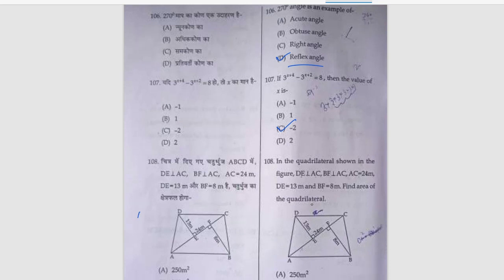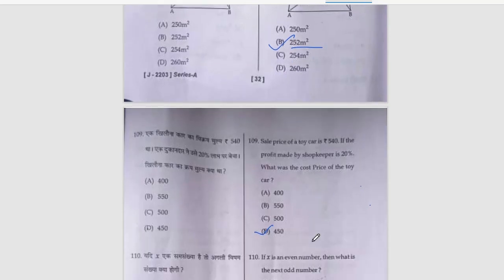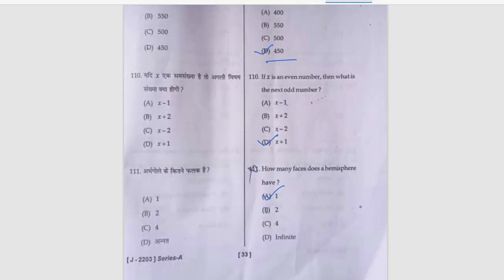If 3 raised to power x plus 3, 3 raised to power x plus 4, minus 3 raised to power x plus 2 equals something, then the x value is minus 2. In this case, area of quadrilateral is 252 meters square. Next: sale price of toy car is 540. If the profit made by shopkeeper is 20%, what was the cost price? That is 450. Next, if x is an even number, then what is the next odd number? That is x plus 1, option number D.